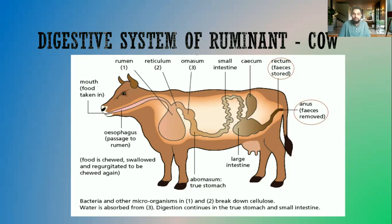The food then enters the abomasum, the true stomach, which releases gastric juice containing hydrochloric acid, pepsin, and renin. The food then moves on to the duodenum, which is part of the small intestine, where further digestion occurs and bile is released. As it moves down, more digestion occurs, and the final digestion takes place in the ileum.